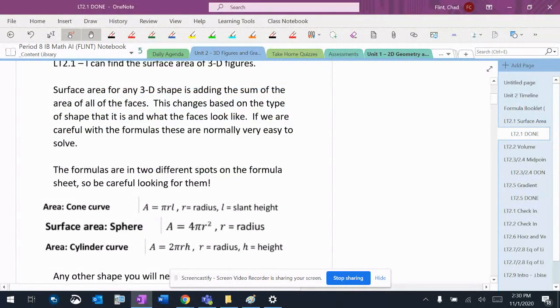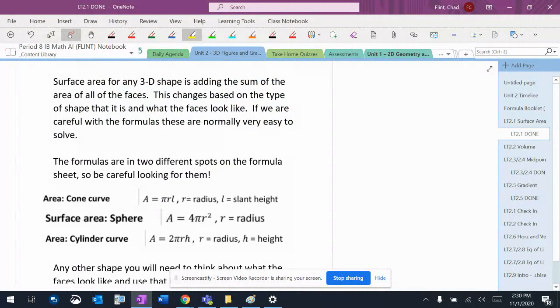First of all, surface area is adding up the sum of all the faces. So we have to find the area of each of the different sides of the shape and put them all together.